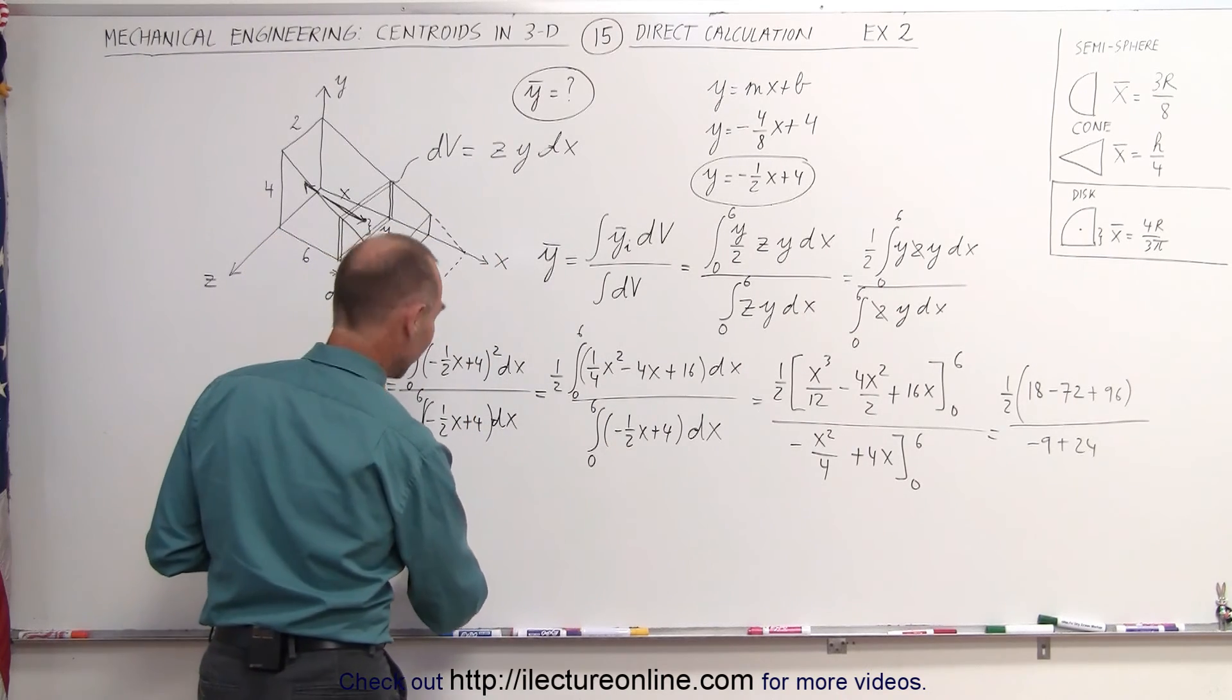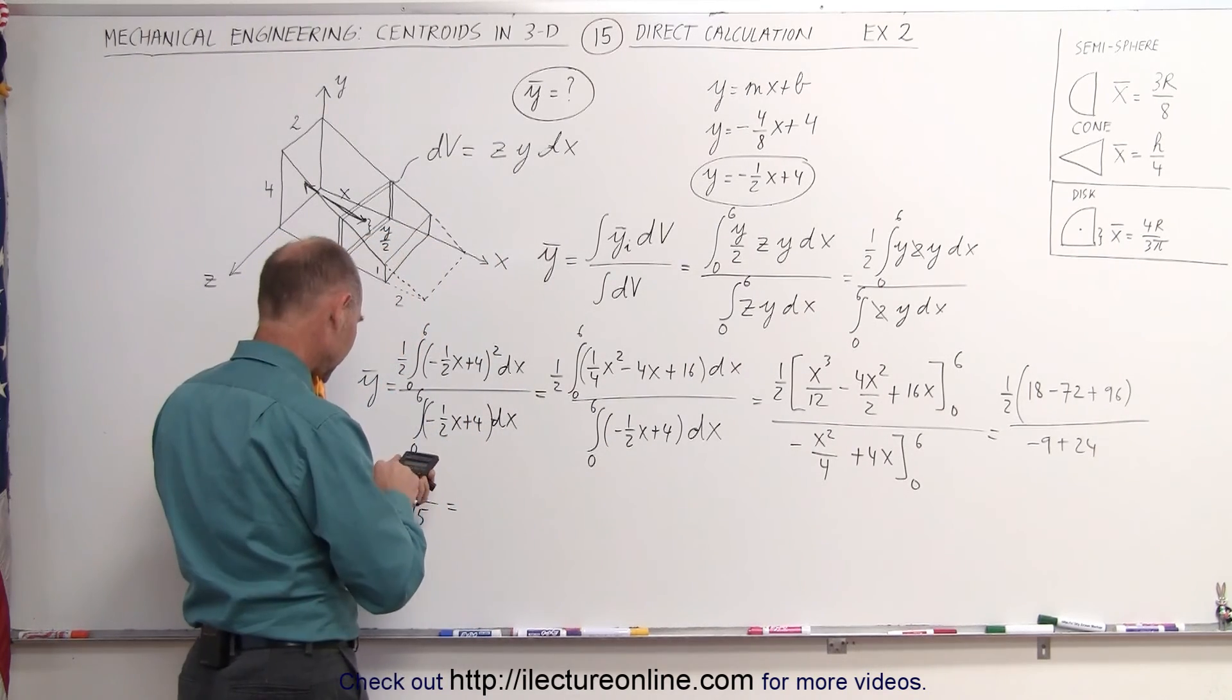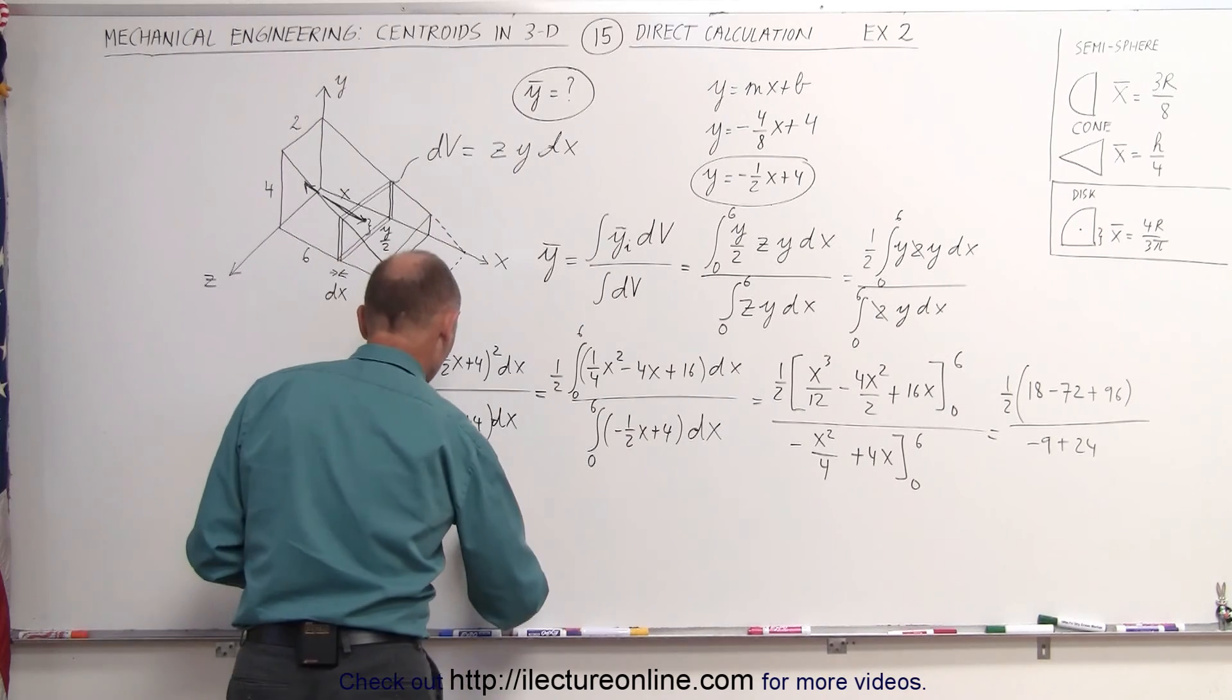We get 21, and divide by 15. 21 divided by 15 equals 1.4.